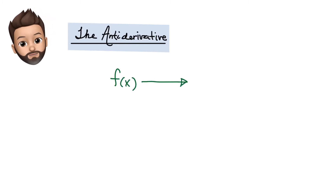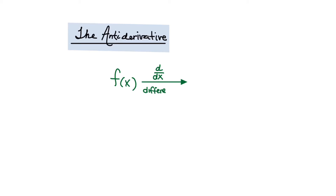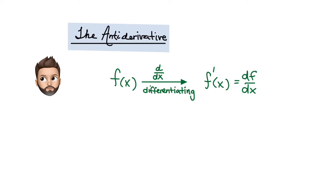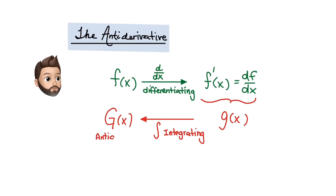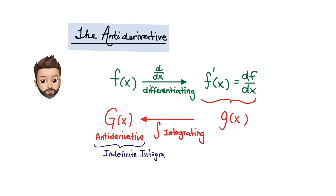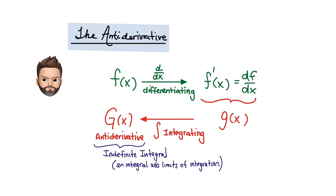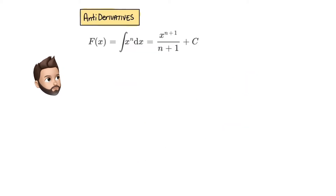The anti-derivative. When we take the derivative of a function, it's called differentiating, and the result we write as f prime or df dx. Now if we had a derivative and we consider it as its own function g of x, and we ask ourselves: what function did I take the derivative of to get this function g of x? What would we get by going backwards? This is called integrating, and the backwards result is called the anti-derivative, or the indefinite integral — an integral with no limits of integration, leaving us with just a function in terms of x.